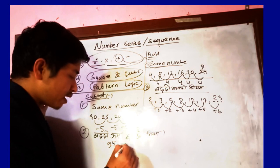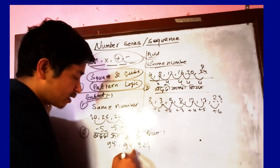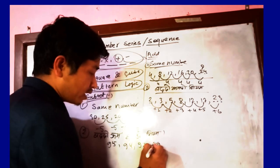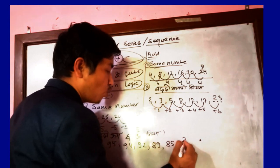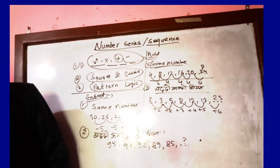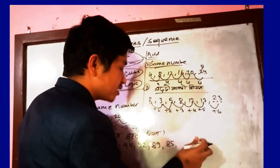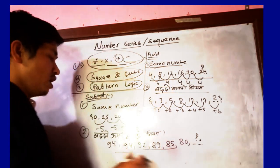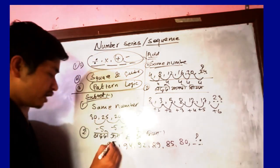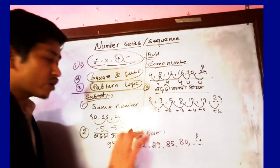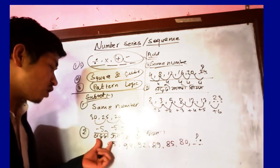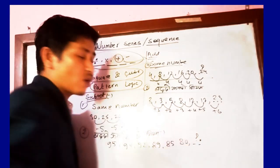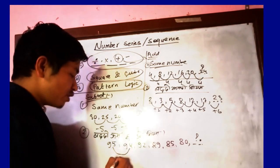Let me show another example. Take this series: 95, 94, 92, 89, 85, 80. What comes next? This is a subtraction process. From 95 to 94 we subtract 1, from 94 to 92 we subtract 2.